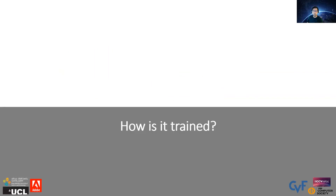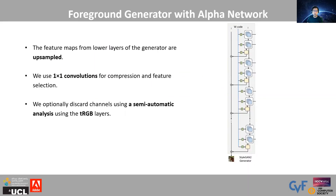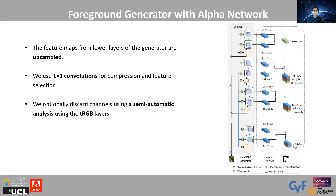How is the network trained? The alpha network is attached to the StyleGAN generator. We make some design choices to make it lightweight and effective. First, we upsample the lower layers to match the next layers. Second, we use 1x1 convolutions for feature selection and compression. Third, in the only semi-automatic step in our method, we discard some channels. Note that this step has to be done only once. For details, refer to the paper.